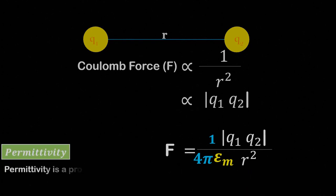Permittivity is a property of the medium that affects Coulomb's force. The higher the permittivity of the medium, the lower the effect of the force between the charges.